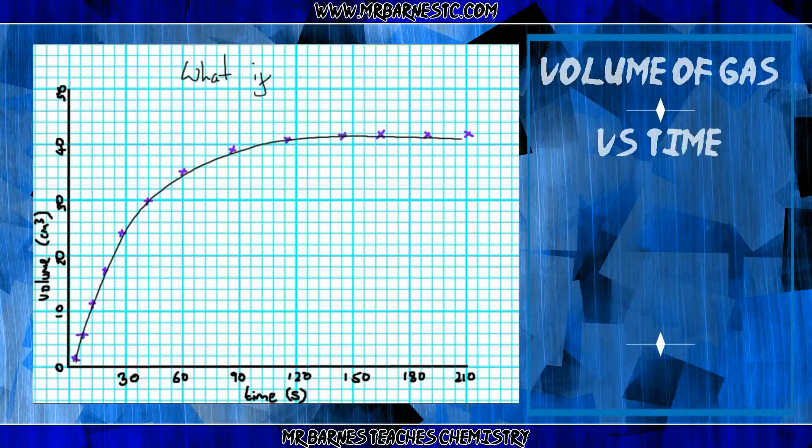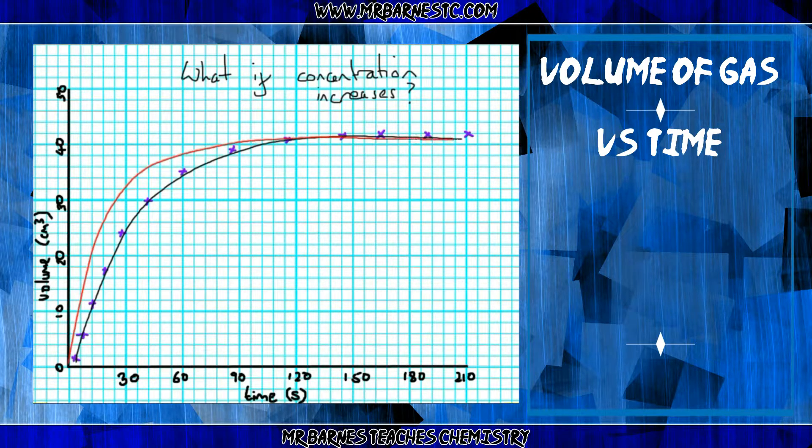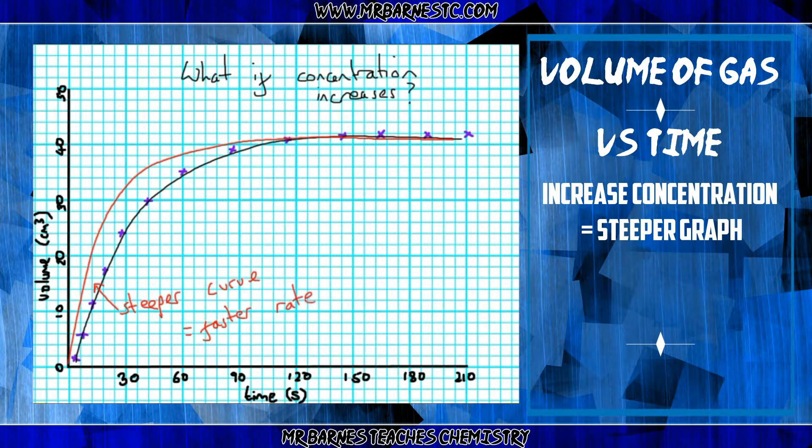What you might be asked is to adapt your graph to say what happens if the concentration increases. And nice and simply, you should remember now that if you increase the concentration the rate of reaction goes up. Therefore, your graph is going to be steeper.